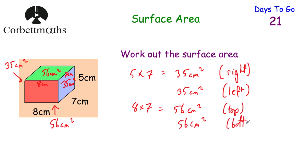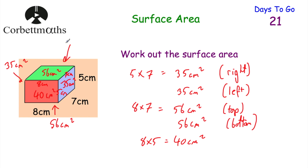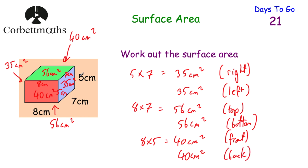Finally, let's find the area of the rectangle on the front of the cuboid. It's got a length of 8 centimetres and a height of 5 centimetres. So 8 multiplied by 5 equals 40 centimetres squared. The area of the rectangle on the front is 40 centimetres squared, and that means the area of the rectangle on the back of the cuboid would also be 40 centimetres squared. We now know the area of all six faces.